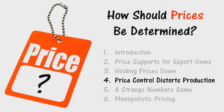Price control always reduces, unbalances, distorts, and discoordinates production. Price control becomes progressively harmful with the passage of time. Even a fixed price or price relationship that may be right or reasonable on the day it is set can become increasingly unreasonable or unworkable. What governments never realize is that, so far as any individual commodity is concerned, the cure for high prices is high prices. High prices lead to economy in consumption and stimulate and increase production — both of these results increase supply and tend to bring prices down again.